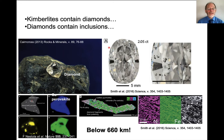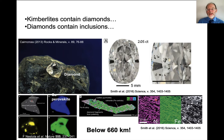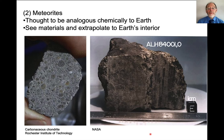Kimberlites do contain diamonds, and the diamonds contain inclusions. Some of these inclusions contain minerals that are stable below 660 kilometers. So even though the kimberlite might be derived from 300 kilometers depth, the crystals it carries are coming from much deeper. Some of these crystals are perovskite-structured, and some also contain interesting iron-nickel alloys. These are x-ray maps — the brighter the color, the greater the concentration of these elements. There are regions of high-nickel and low-nickel, and high-iron and low-iron, interpreted as an original iron-nickel alloy that has separated into two different minerals. We will come back to these iron-nickel alloys in a later lecture.